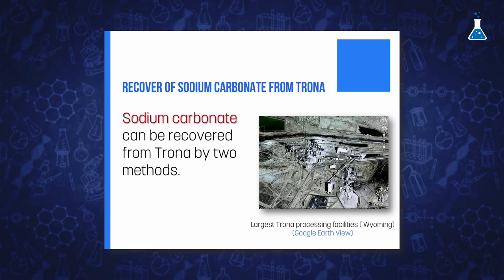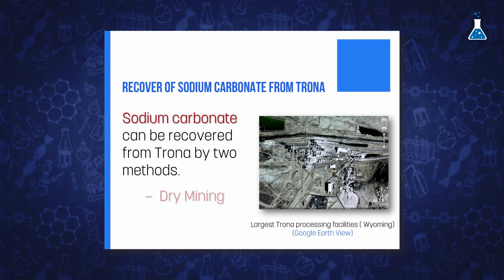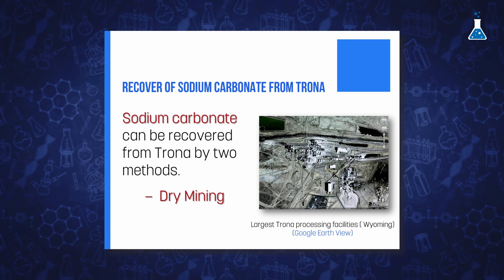Trona occurs in deposits around 400 meters underground and is recovered employing dry and wet methods. Dry mining is similar to underground coal mining by shearing the trona from the face and dropping the recovered trona onto a continuous conveyor system to be moved to the surface for use in the processing plant.